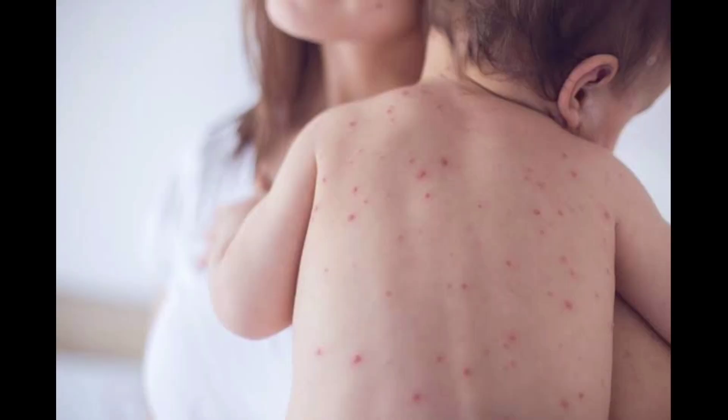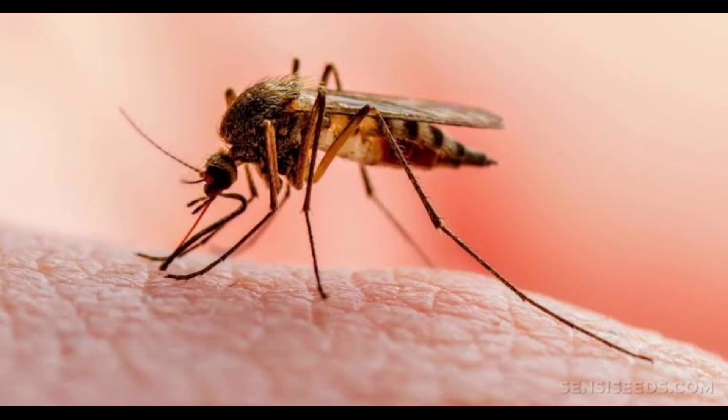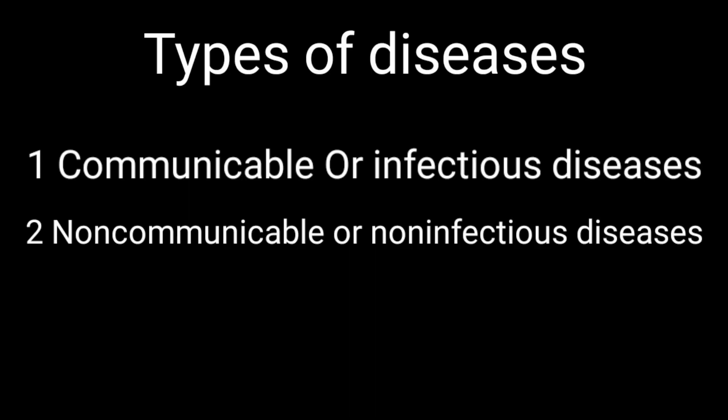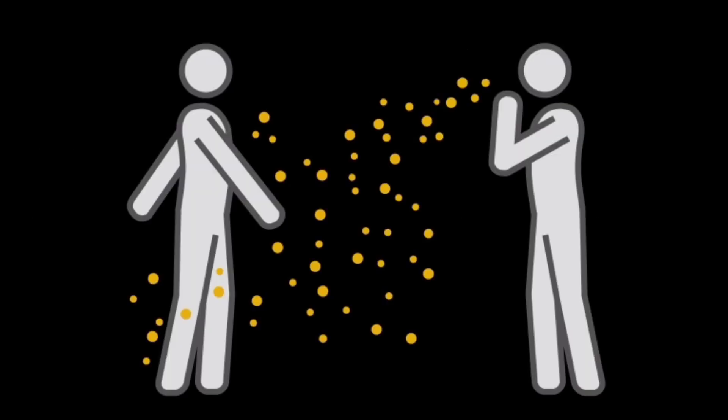Some common diseases like cholera, measles, and malaria are caused by different microorganisms. There are two types of diseases: first, communicable diseases, and second, non-communicable diseases. Diseases which spread from one person to another are called communicable diseases.